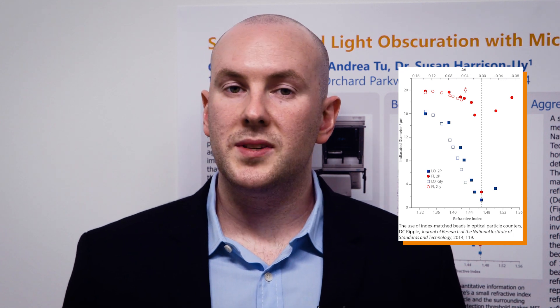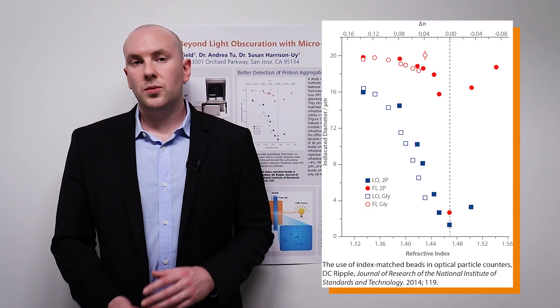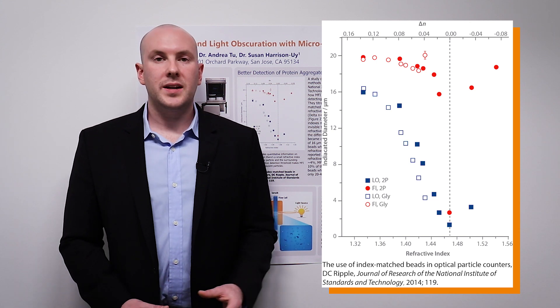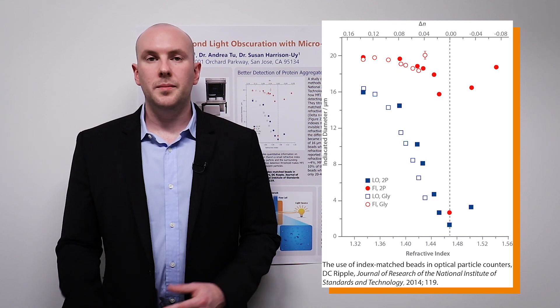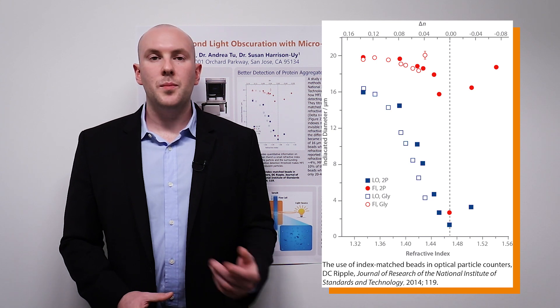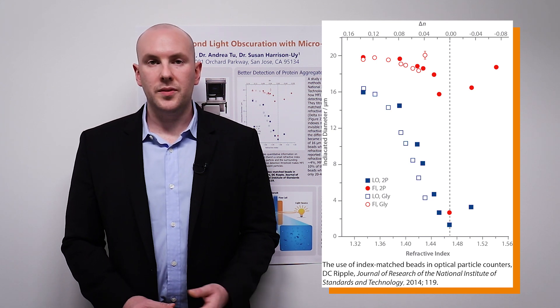As you move left from that dotted line, you begin to see the measurements taken by the two technologies diverge. At only a 4% difference in refractive index between the beads and the matrix, MFI is already measuring within 10% of the nominal diameter of the beads, whereas light obscuration measurements are only coming in at about 25% of the total diameter. So MFI is measuring about 18 microns compared to the nominal diameter of 20 microns, while light obscuration is only measuring 5 microns under those same conditions.